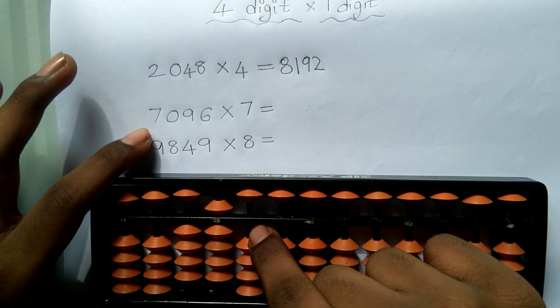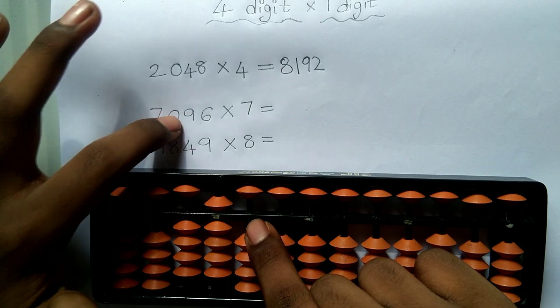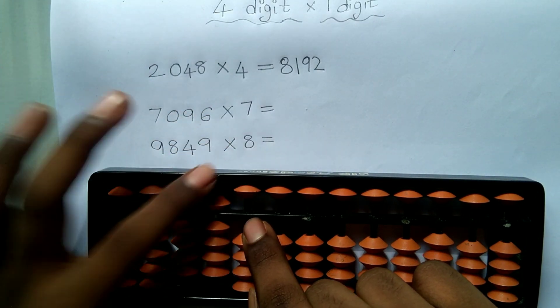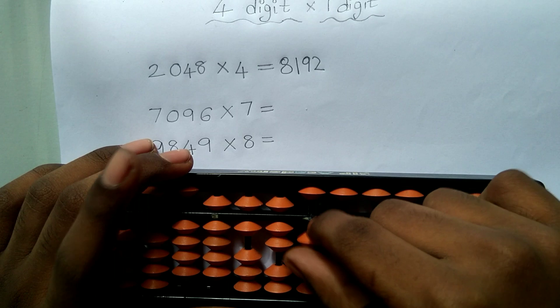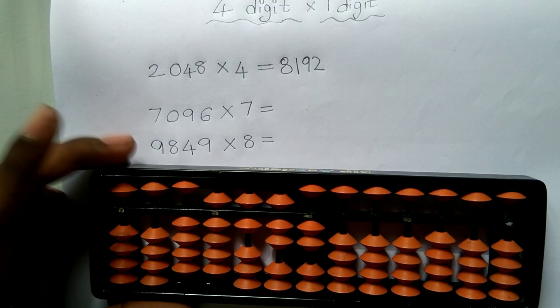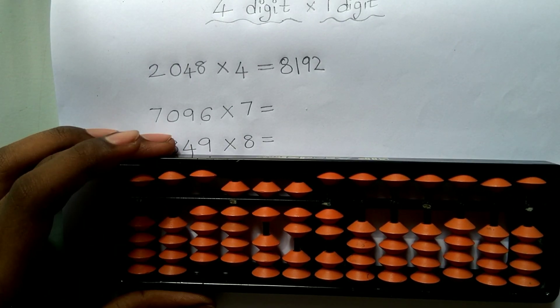And again, we have to continue from this rod where we ended. 96 × 7. 9 sevens are 63. 6 sevens are 42. So 672. So our answer is 49,672.